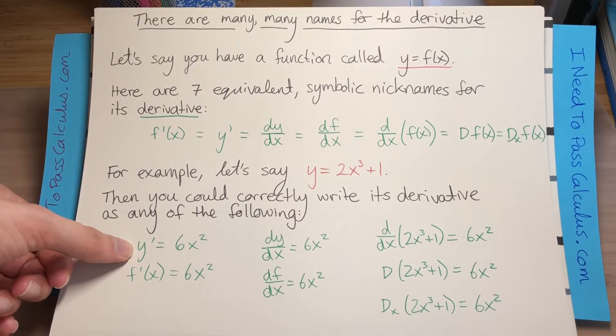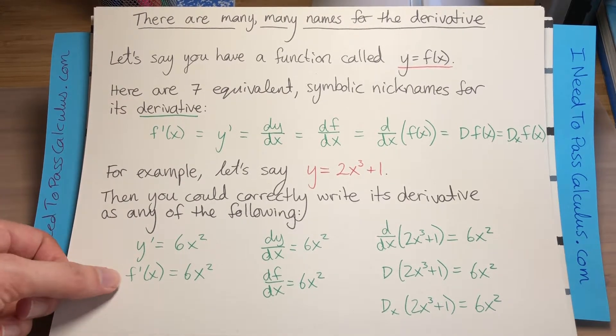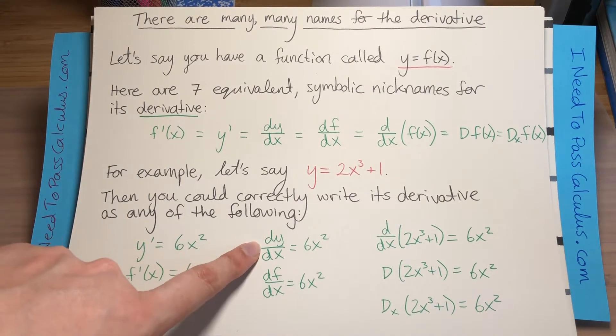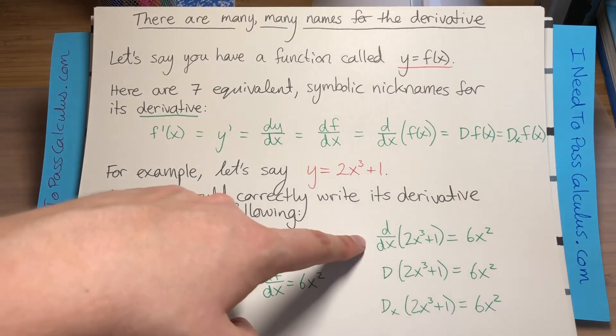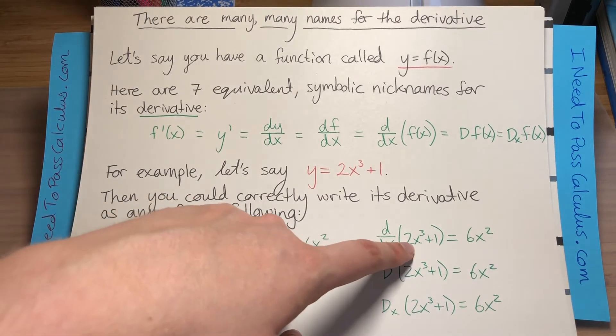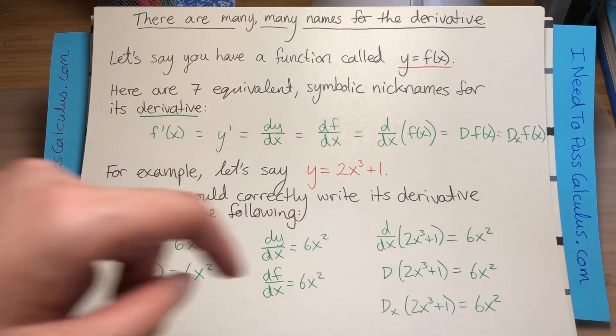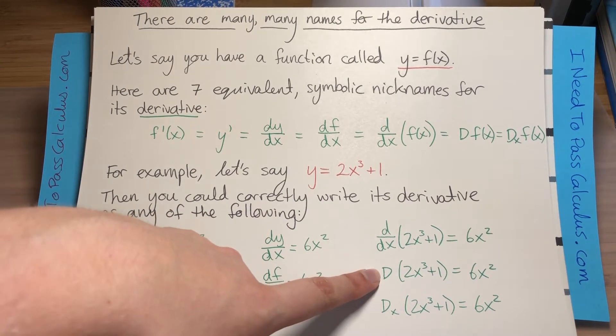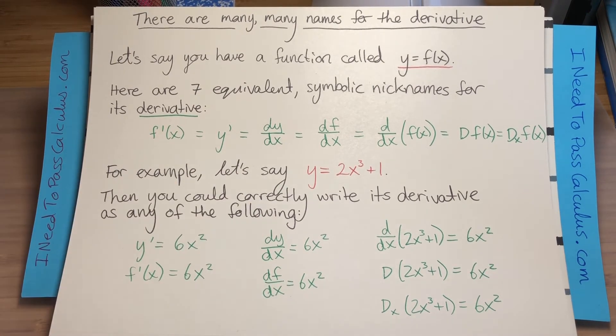y prime equals 6x squared, f prime of x equals 6x squared, dy dx equals 6x squared, df dx equals 6x squared, d dx of 2x cubed plus 1 equals 6x squared, or either of these, the differentiation operator of 2x cubed plus 1 equals 6x squared, or dx of 2x cubed plus 1 equals 6x squared.